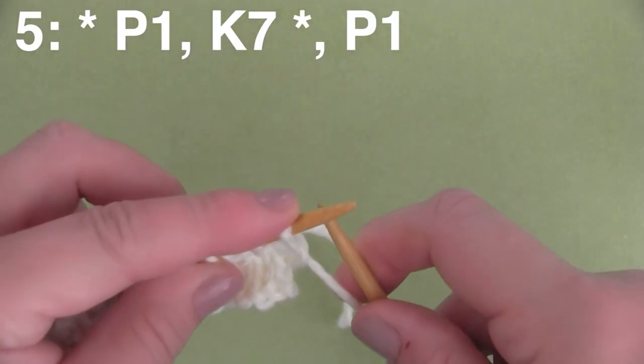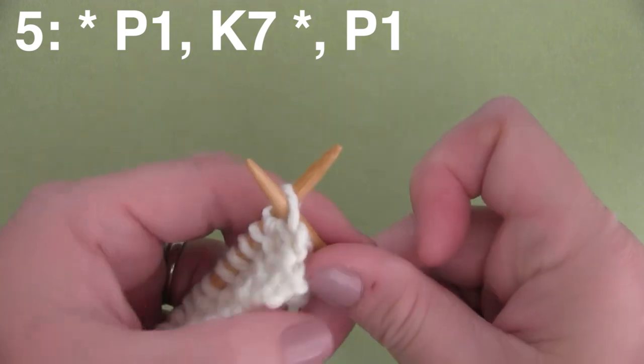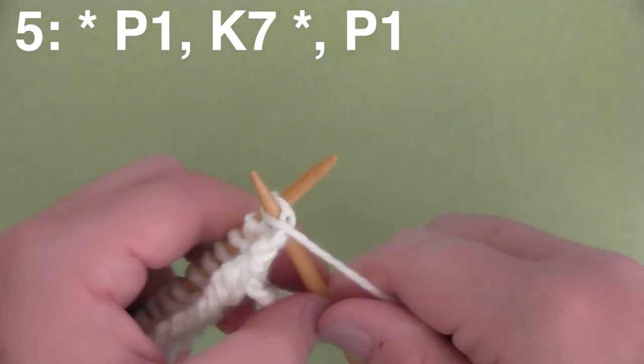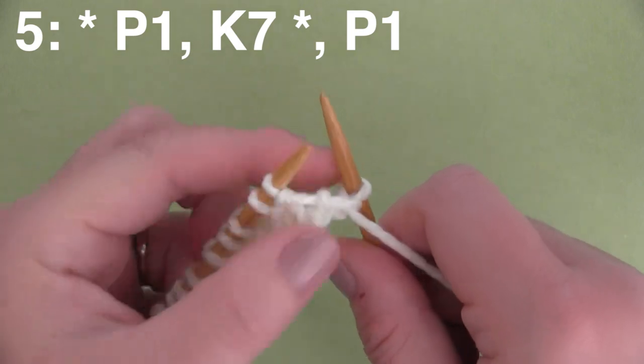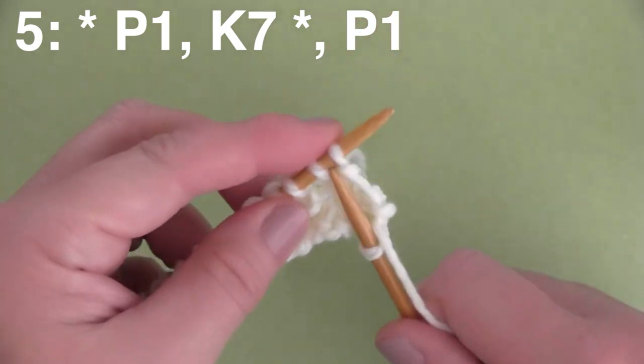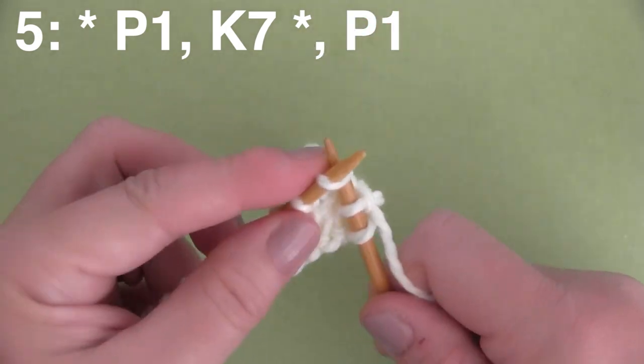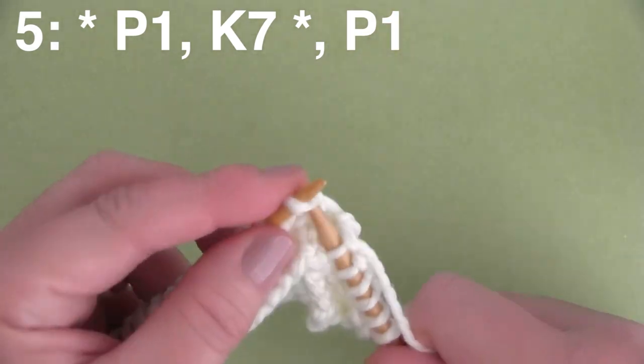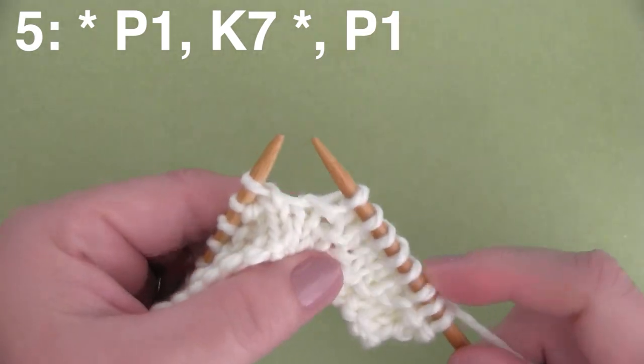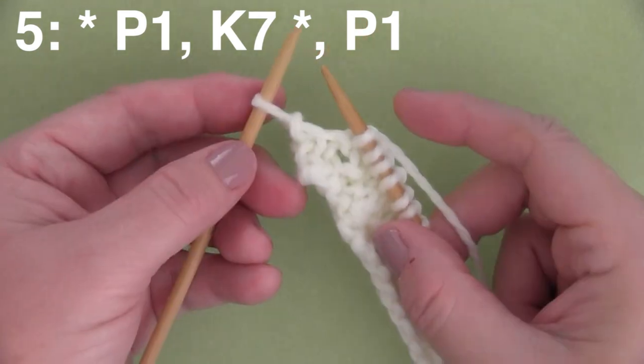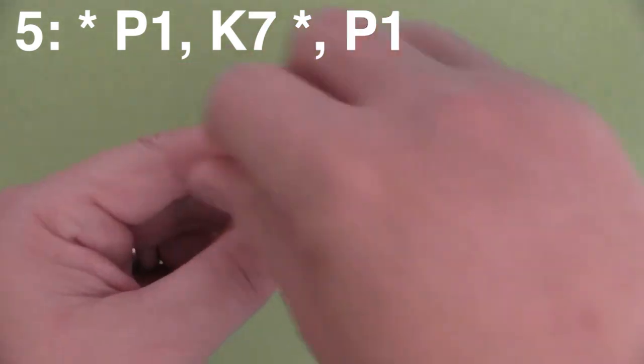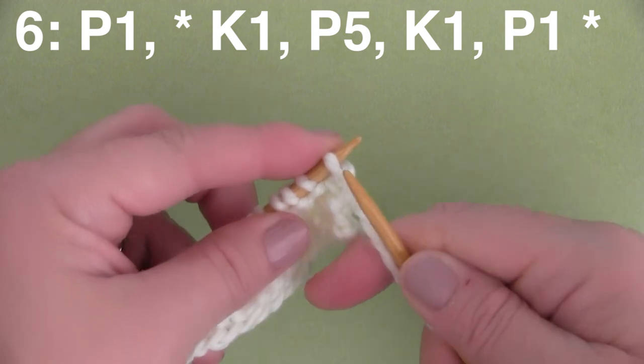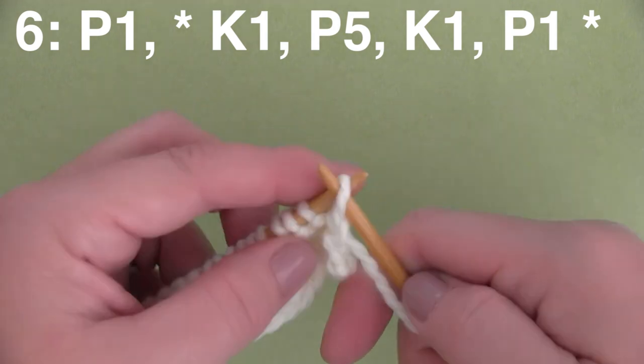And Row 5, we're purling 1, and then we are knitting 7. And those are between the asterisks, so that means that we are repeating P1, K7 all the way down the row until we hit one last little stitches remaining. And that will be a purl stitch, purl 1. Now our diamond pattern is tapering back up.